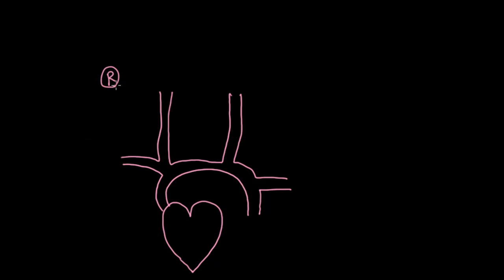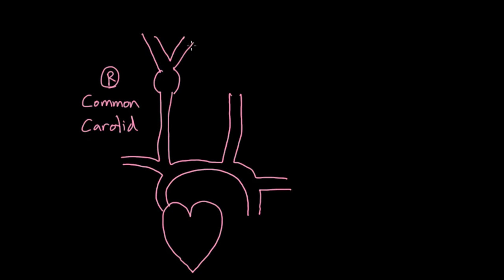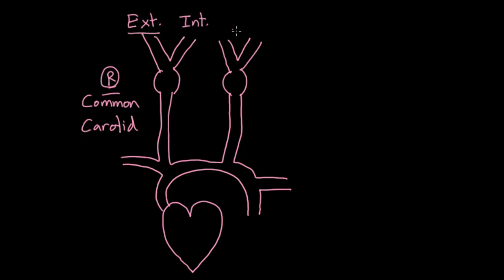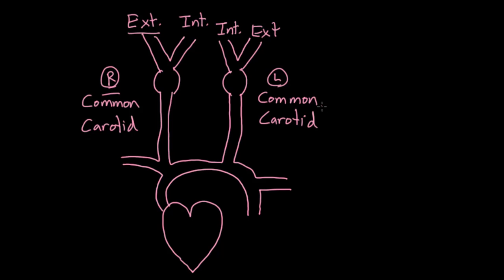On the right side, we have the right common carotid artery. It's called 'common' because eventually it bulges and splits into the internal branch and the external branch — for example, the right external carotid artery. The same thing is happening on the other side, named the same way: an internal branch and an external branch of the left common carotid artery. These are named exactly the same way, and these are the ones we're going to focus on.